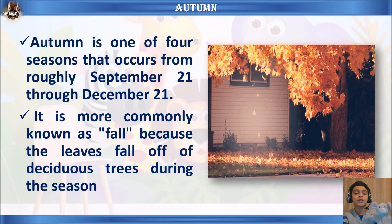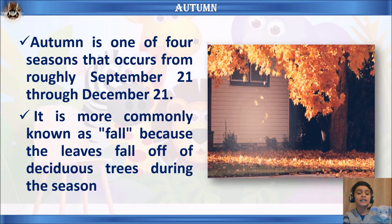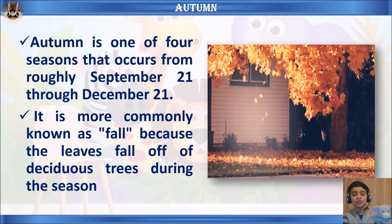Now let's learn some facts about autumn. Autumn is one of the four seasons, occurring from roughly September 21st through December 21st. It is more commonly known as fall because the leaves fall off the deciduous trees during the season.